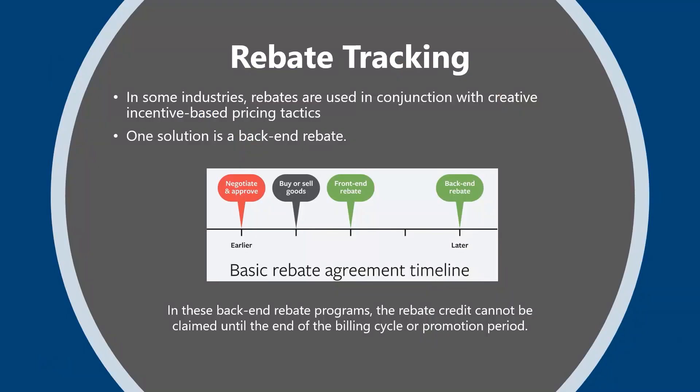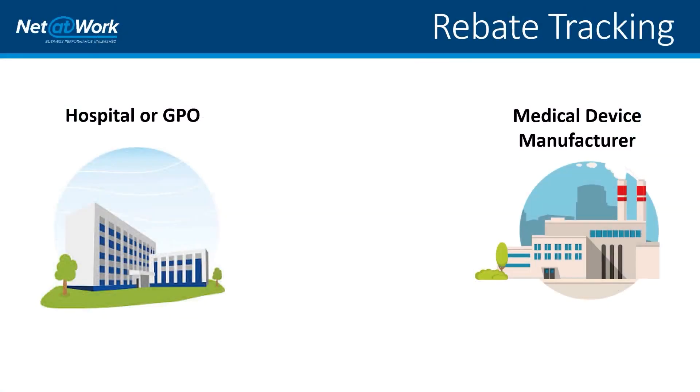In some industries, rebates have become a lot more complex and are used in conjunction with creative incentive-based pricing tactics to allow businesses to become more competitive. One of these solutions is known as the back-end rebate, and there are many examples of variables in these agreements — some are based on growth over a specified period, others on volume or value of product sales. Sometimes it's an incentive based on purchasing from a specific distribution center. In all cases, these back-end rebate programs require that the intermediary claims the rebate at the end of a billing cycle.